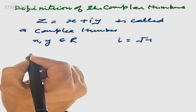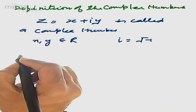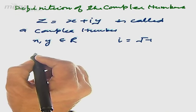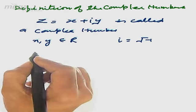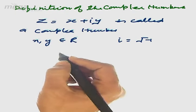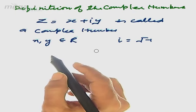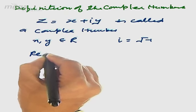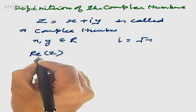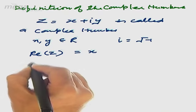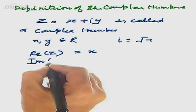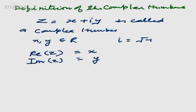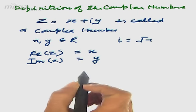Why is z = x + iy called a complex number? Because the complex number is the biggest set of numbers — all numbers are a subset of complex numbers, but the vice versa is not true. Here x is the real part of z, written as Re(z) = x, and the imaginary part of z is written as y. Note that the imaginary part is taken as y only, not as iy.